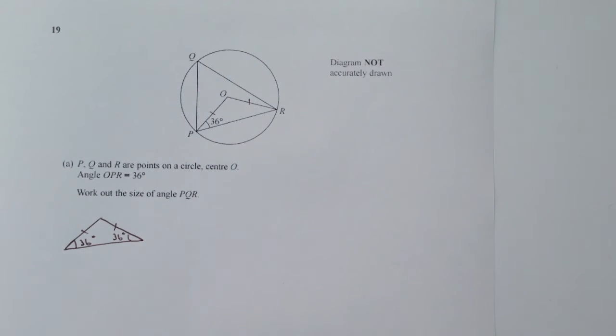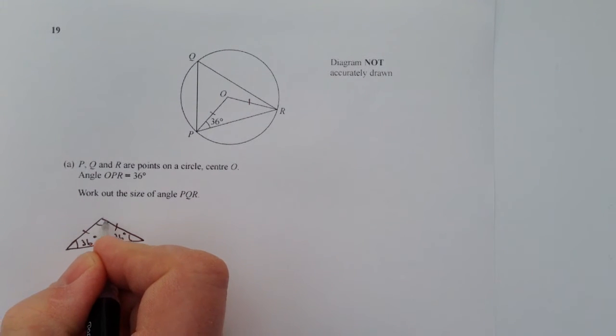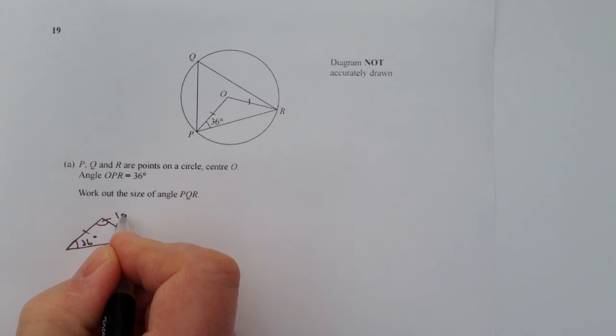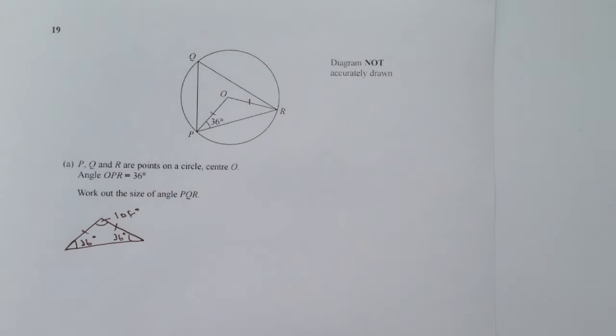Then it means that this top angle here is going to be a hundred and eight degrees because the internal angles of a triangle add up to 180. We know these two are the same, take it away from 180 and we get a hundred and eight at the top. So therefore this angle here is a hundred and eight degrees.